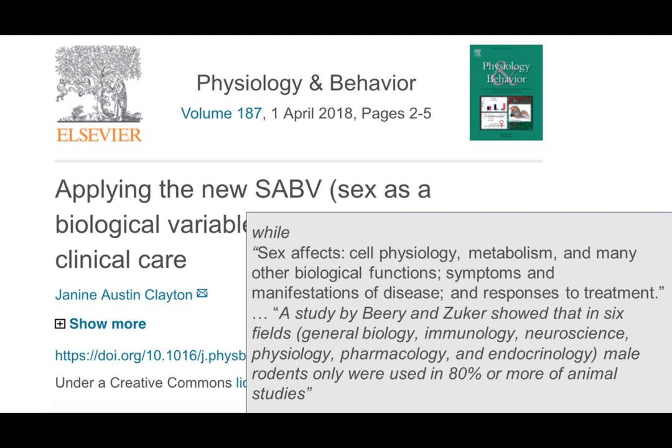The next rigor criteria is sex as a biological variable. Sex affects cell physiology, metabolism, and many other biological functions. It affects symptoms, manifestations of disease, and responses to treatment. Part of the reason why we have a lot of clinical trials failing is actually because of sex. Sex is absolutely considered in clinical trials as a very important variable — you have to balance males and females in any clinical study.